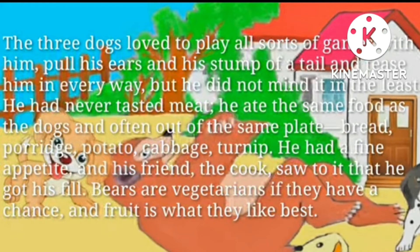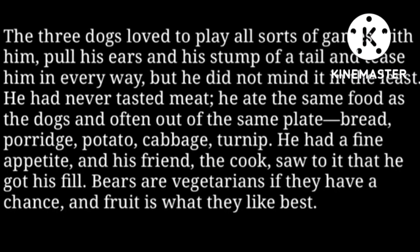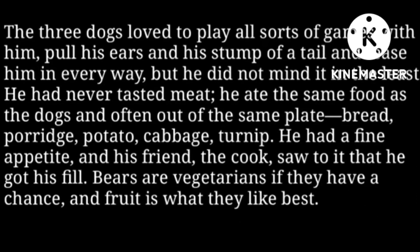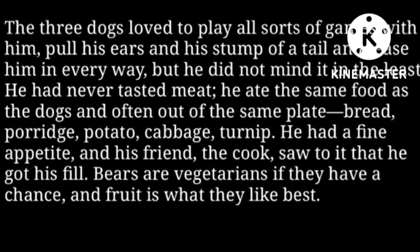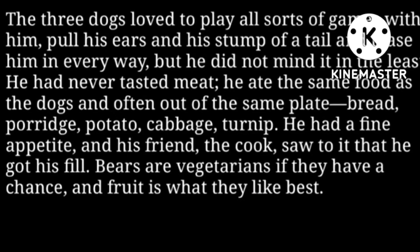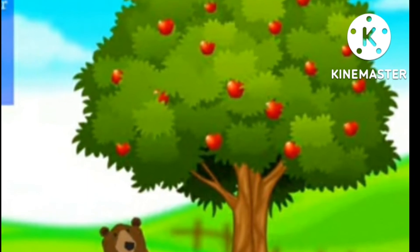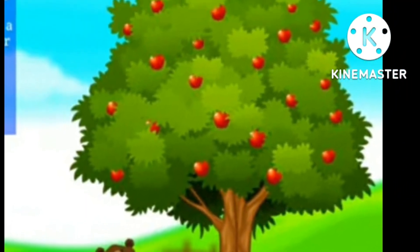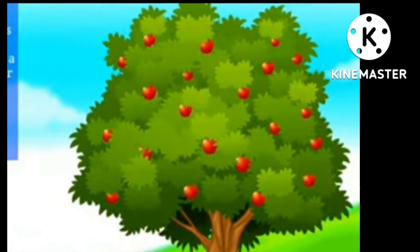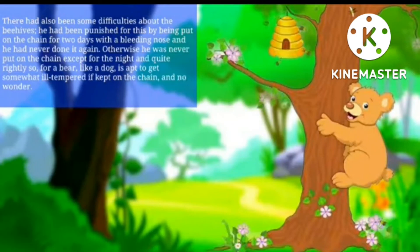He had a good appetite and the cook used to feed him well. His diet did not include meat — he was fed with bread, porridge, cabbage, potatoes, and turnips. He was also taught not to climb apple trees or touch the beehives. At a very young age he used to climb the apple trees, but he later realized it was not wise; instead, he waited for the apples to fall down and then ate them.